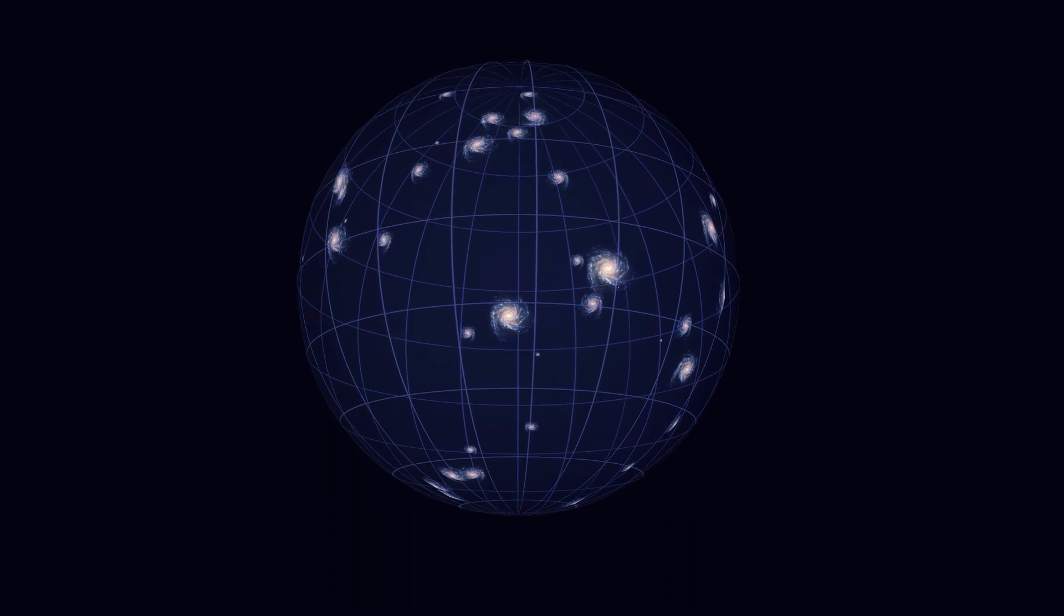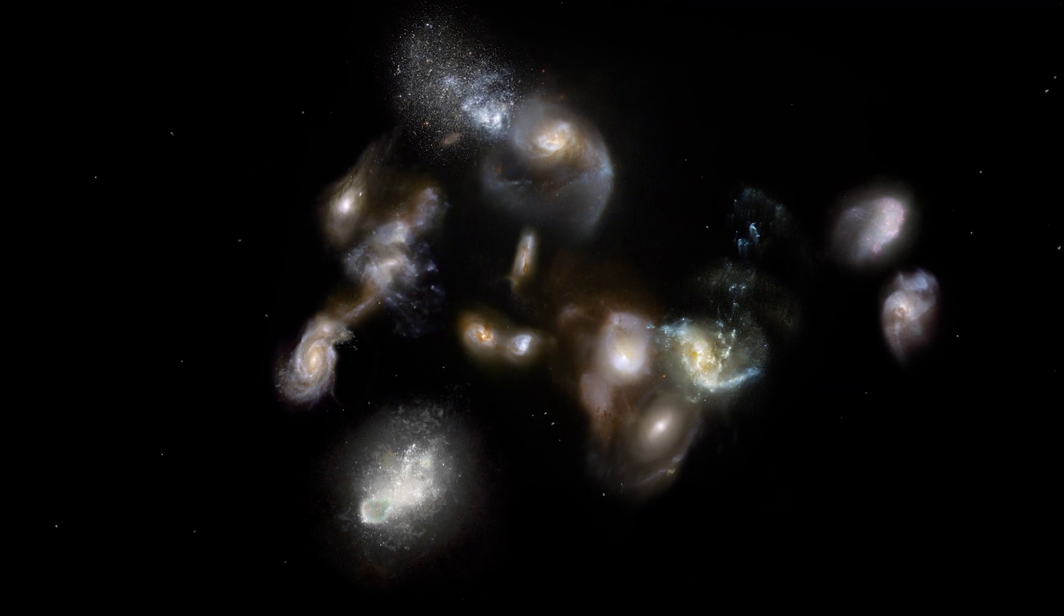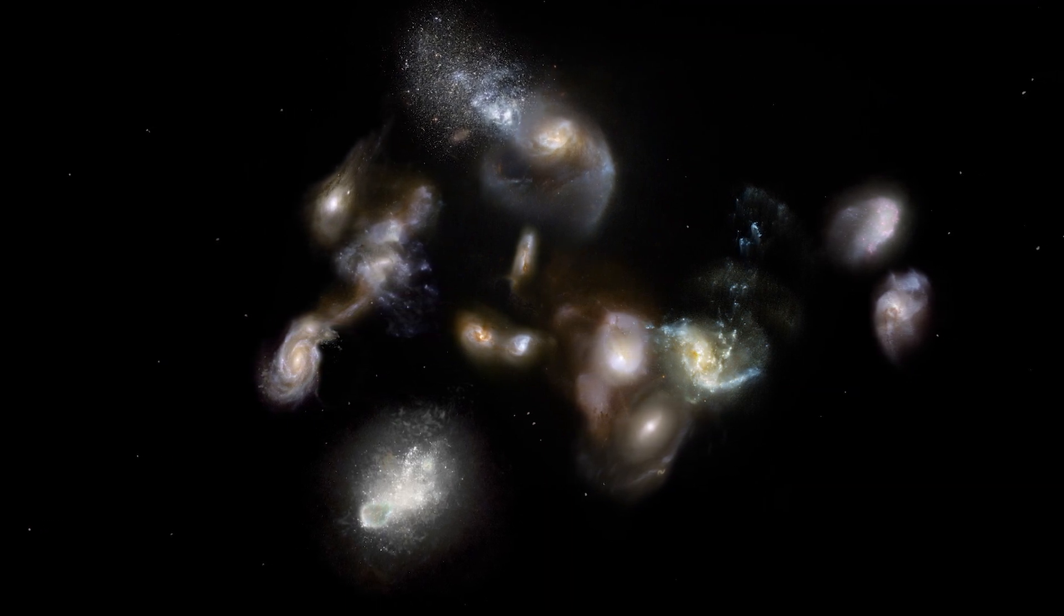As matter falls into the cluster, it loses kinetic energy and starts to slow down. However, the universe is also expanding, which means that the cluster is getting larger. And as a result, there's this point where the gravitational attraction of the halo is no longer strong enough to overcome the expansion of the universe. And then this infalling matter is then turned around and sent back out.